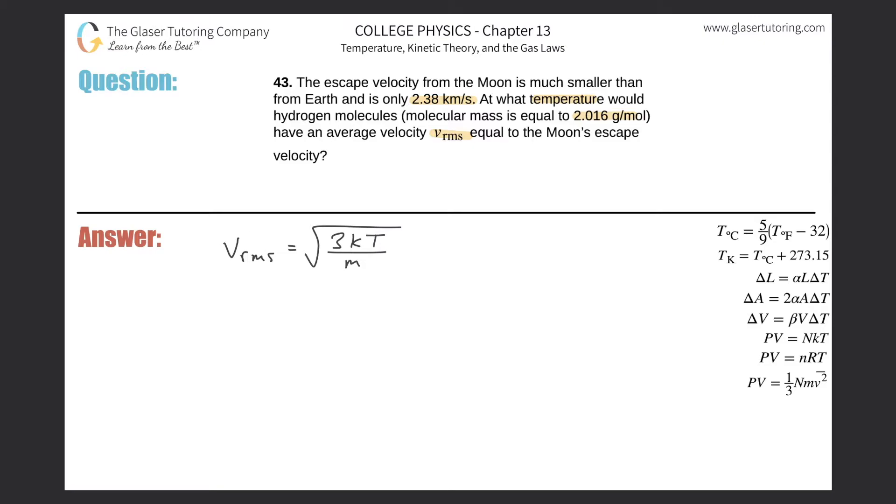This equation relates velocity to the temperature. Now our goal is to solve for the temperature, so let's just do that right off the bat. I have to square both sides, so I have v_rms squared will equal 3 times k times T all over m.